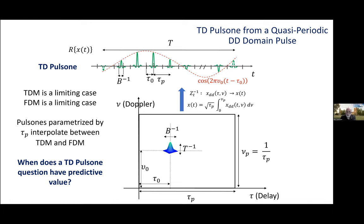So, here we see a delay-Doppler domain pulse located at tau_0, nu_0 within the fundamental period. Along the delay axis, it's spread over a length 1 over B. And along the Doppler axis, it's spread over a length 1 over T.